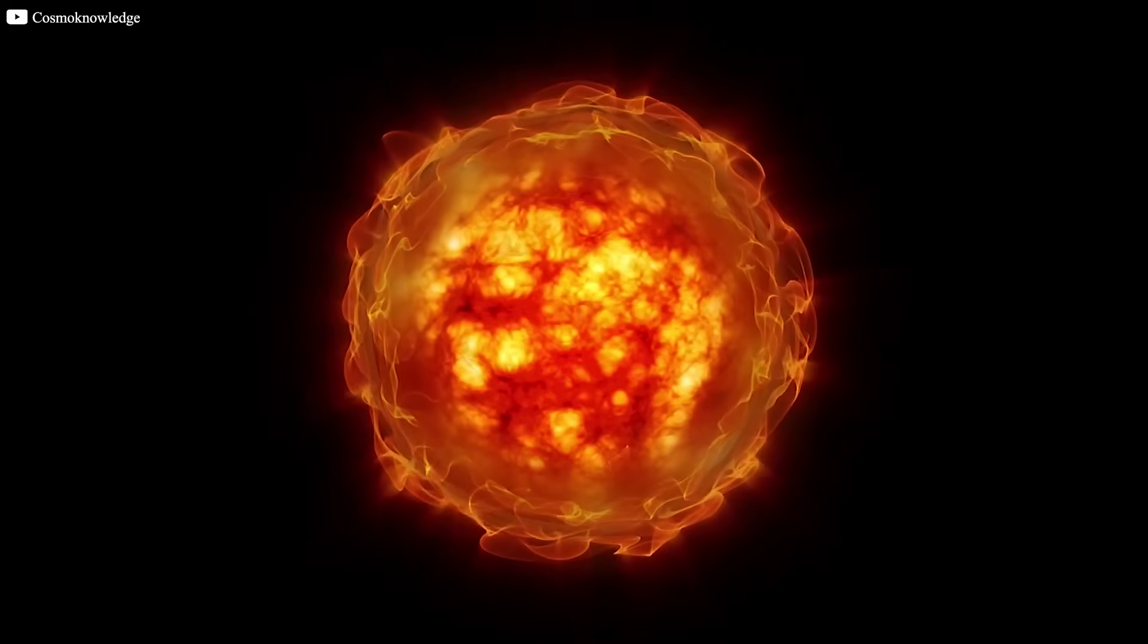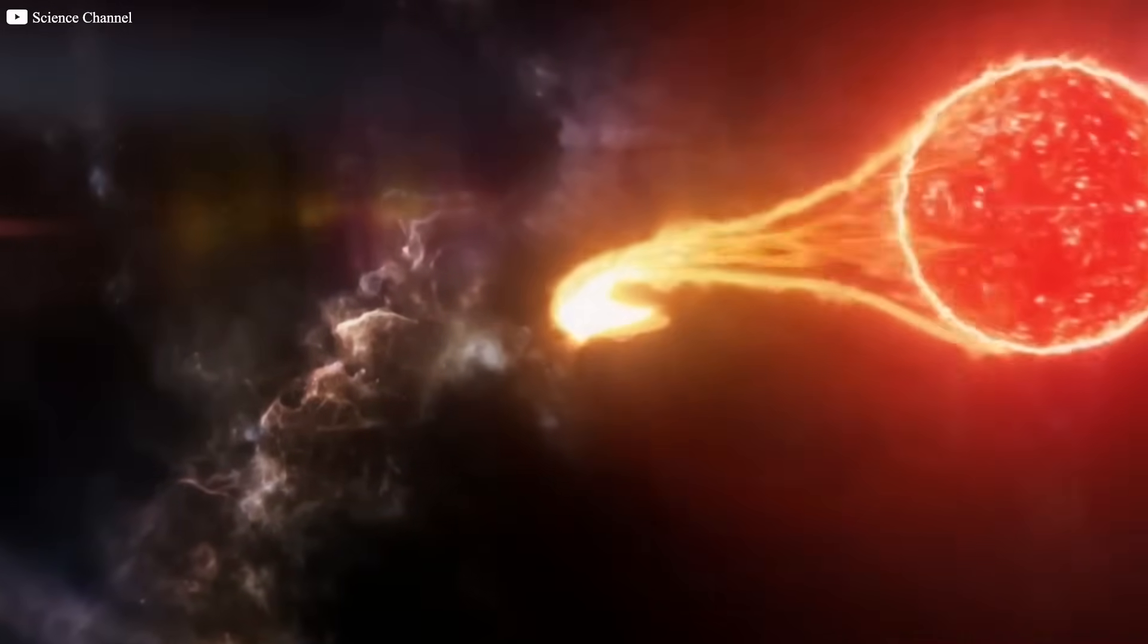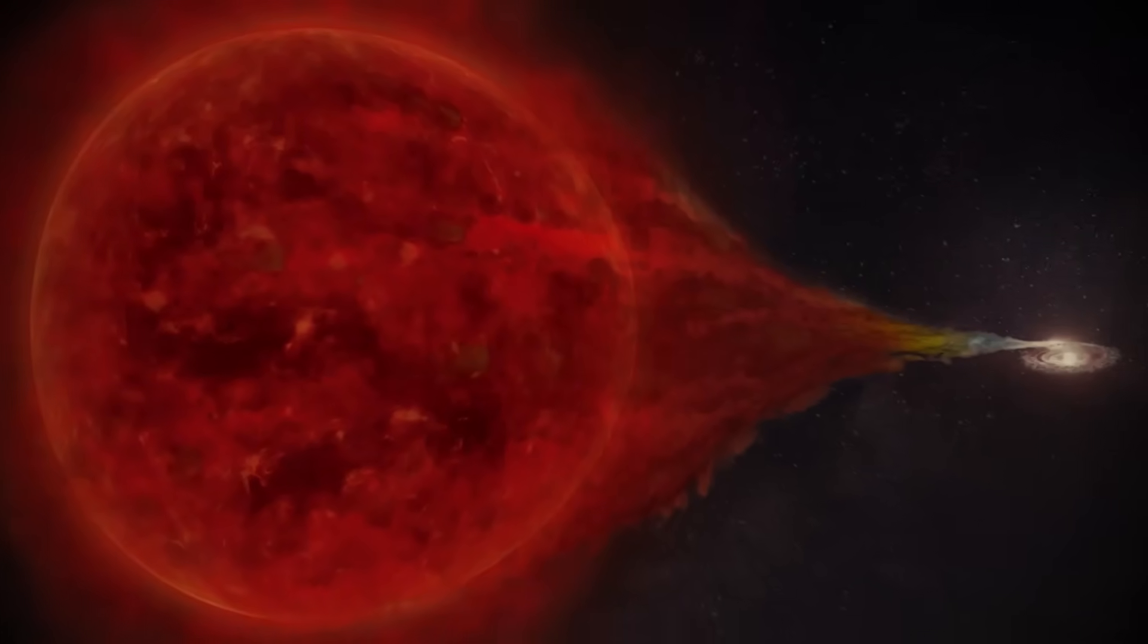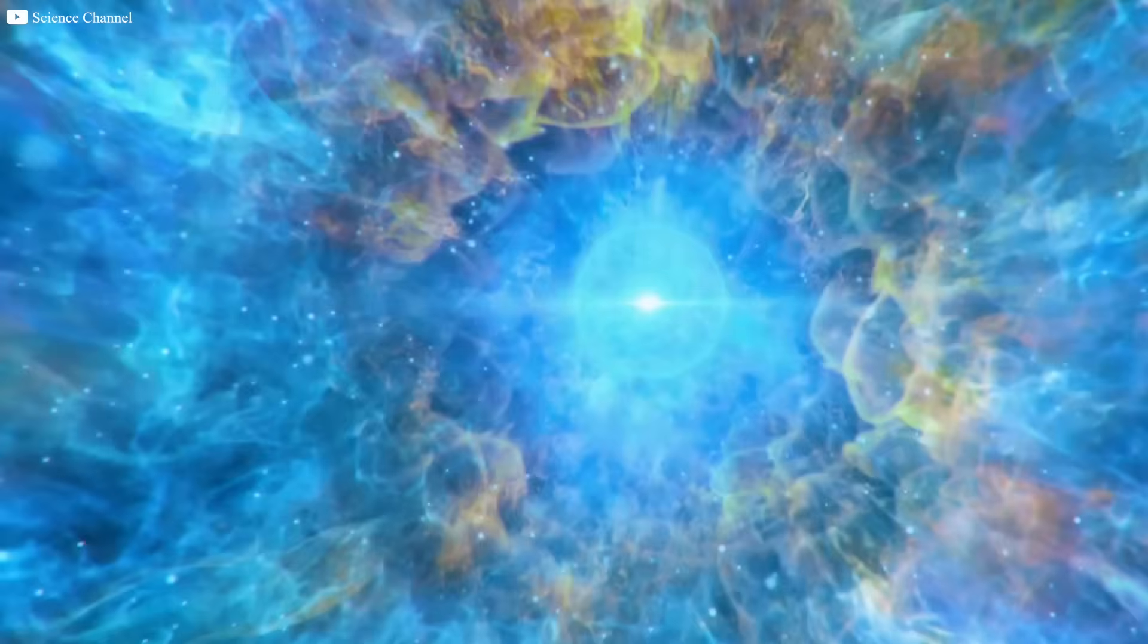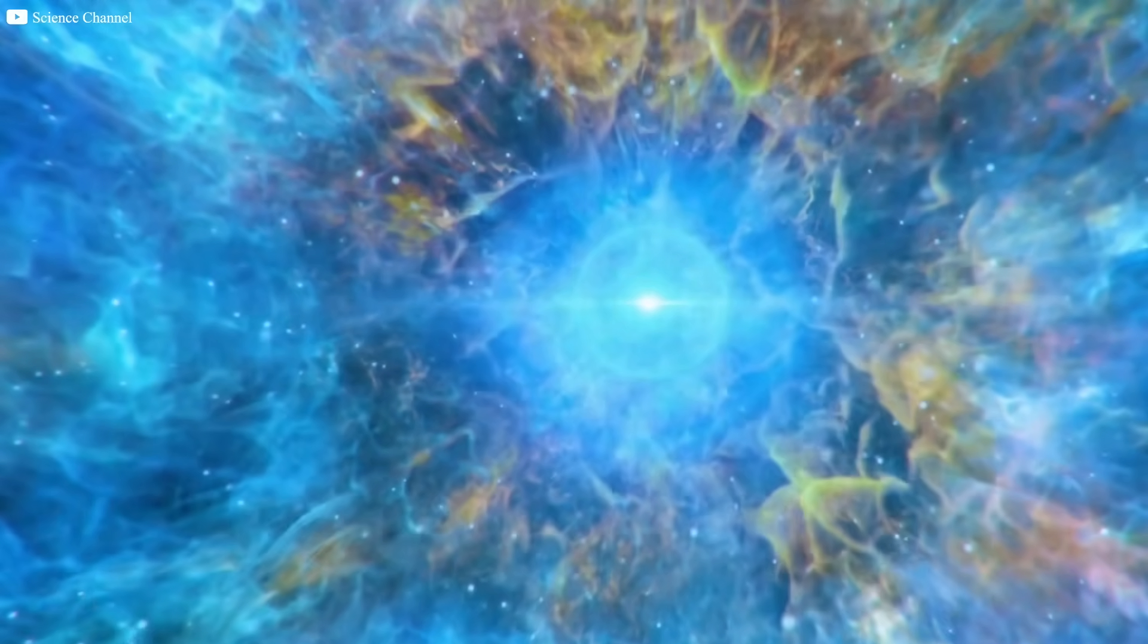Unlike supernovae, which mark the death of a star, a nova occurs when a white dwarf star pulls material from its companion, a red giant, eventually leading to a thermonuclear explosion on the surface of the white dwarf. While a nova is not as destructive as a supernova, it is still a spectacular event.